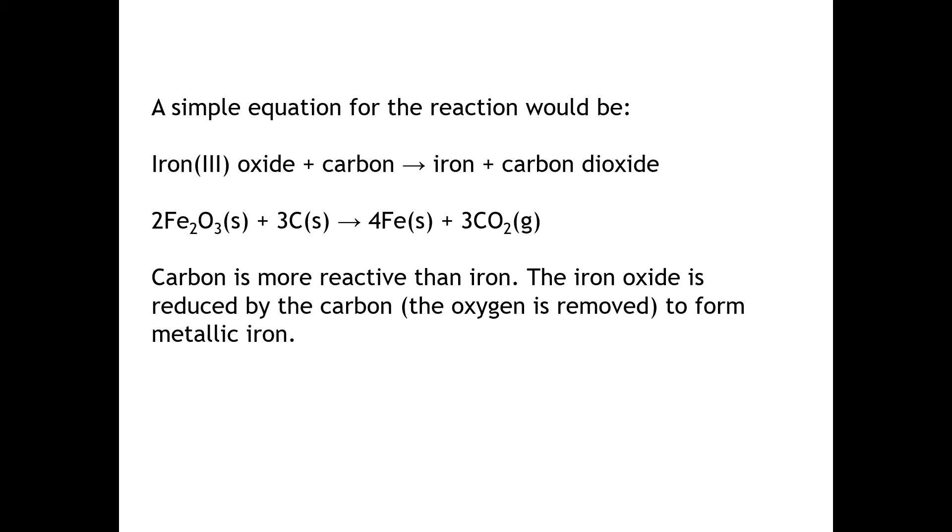In the video you just saw, you saw a simple method in which iron could be extracted from iron oxide. I took the iron oxide and added carbon from a match, and the carbon snatched off the oxygen from the iron to form magnetic iron plus carbon dioxide. This is the balanced equation for the reaction. The thing to note is that carbon is more reactive than iron. The iron oxide is reduced, i.e. broken up from metal ions to metal atoms by the carbon. The oxygen is removed to form the metallic iron.